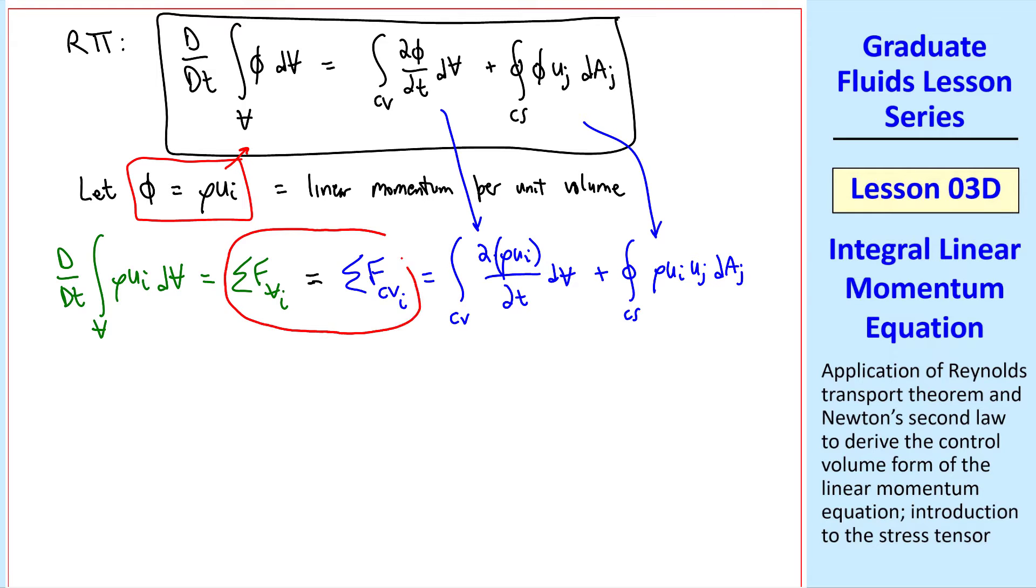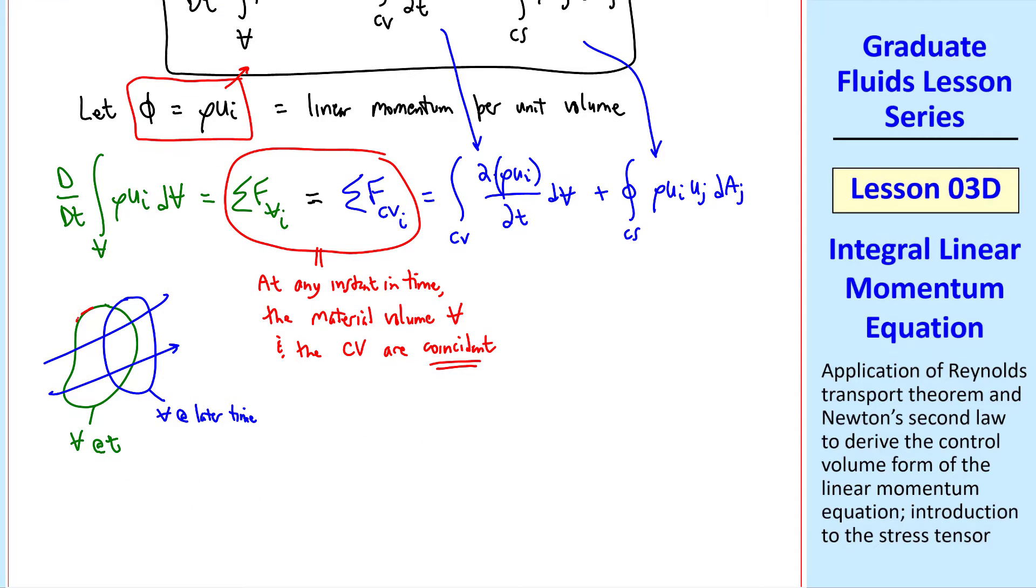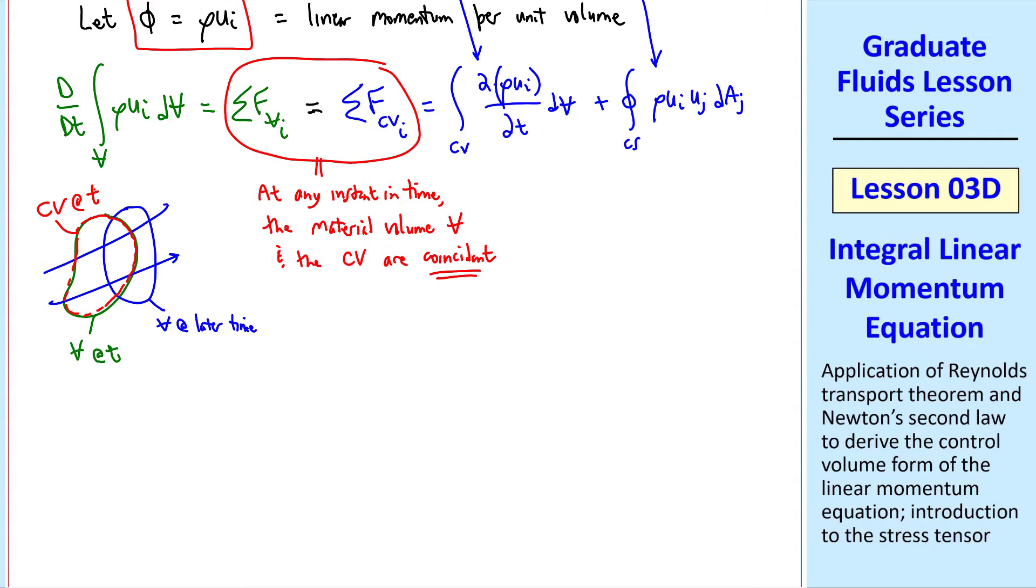The key to our argument here is that at any instant in time, the material volume v and the control volume are coincident. In other words, they occupy the same space. We've made this argument before. If this is our material volume at time t, and it's in a flow field, it moves and distorts as it moves with the fluid. So this is the volume at some later time. But we choose our control volume to be at exactly the same location and same volume at time t as the material volume. The control volume can move or distort any way we choose, independent of the flow. But our argument here is that at this time t, these two blobs or potatoes of fluid are at the same location, occupying the same volume. Therefore, any forces that act on it will be the same, whether you're talking about the material volume at time t or the control volume at time t.